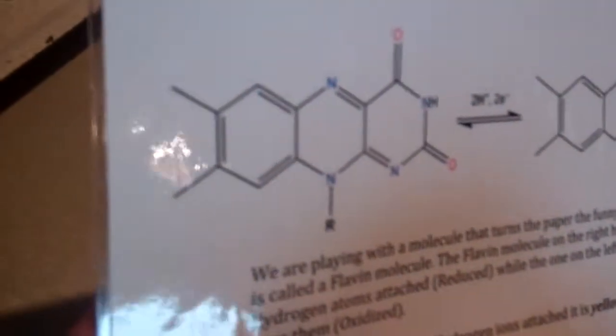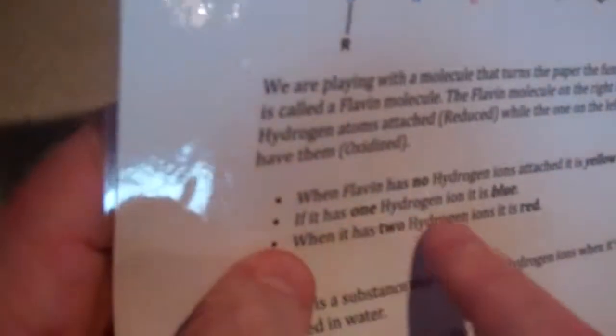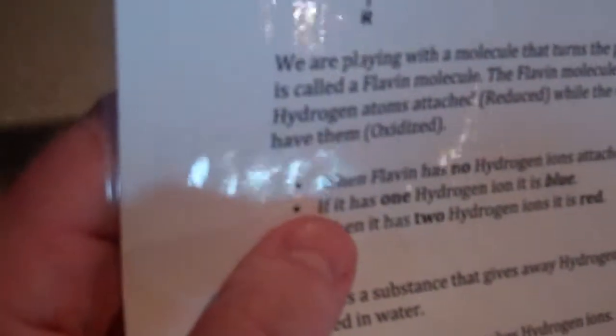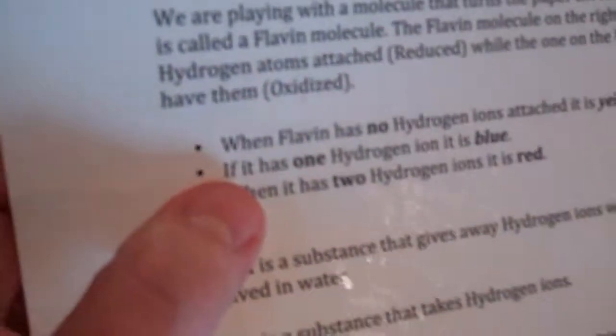Because now I can say, oh, flavin, when it doesn't have hydrogen atoms, and if this takes them away, then it must have been the base that made it yellow. Yes. And if I read this, if it has one, it turns blue. Oh, blue, is that sort of, I don't know what blue does because I don't see blue anywhere.